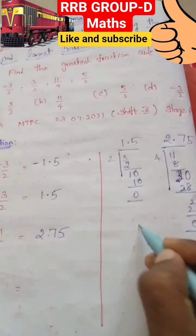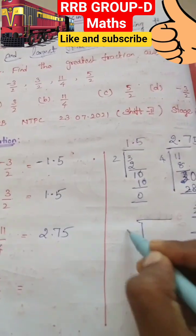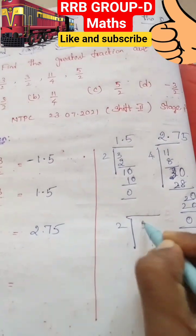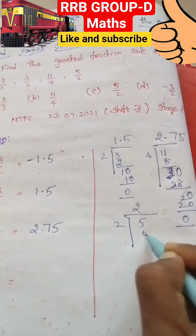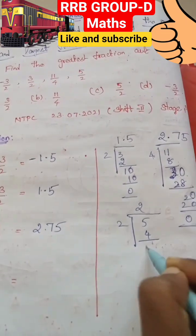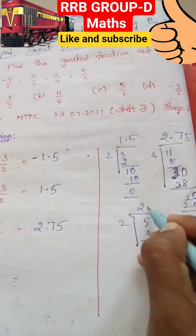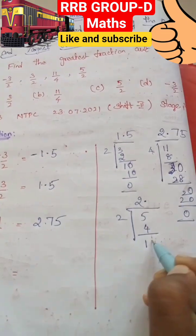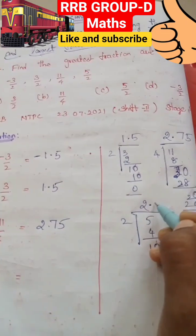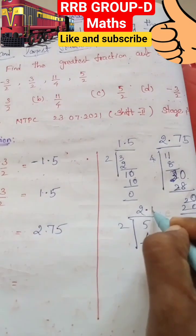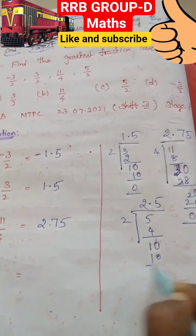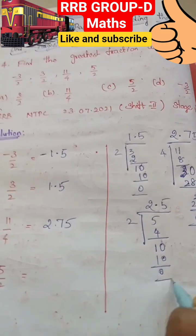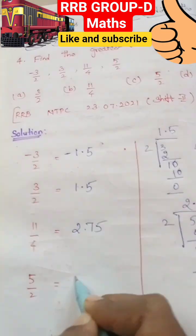Next one: 5 by 2. 2 twos are 4, remainder 1. So decimal point. 0.5 — 2 twos are 10, remainder 0.